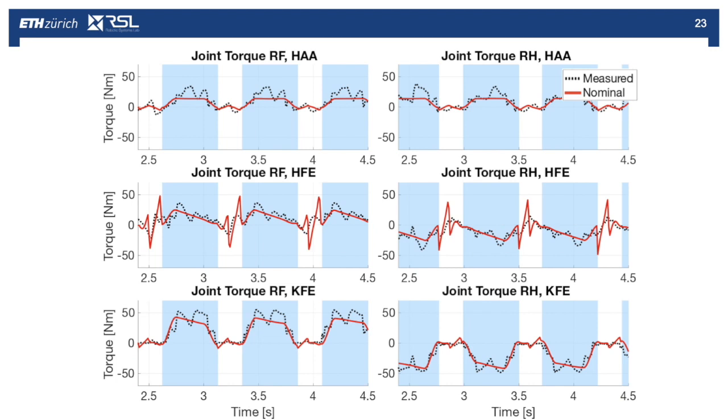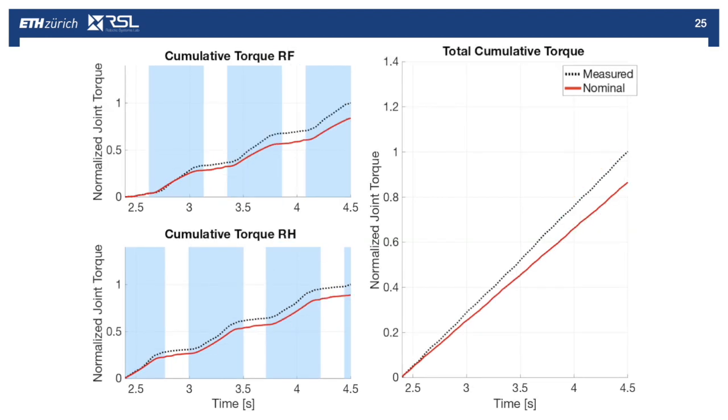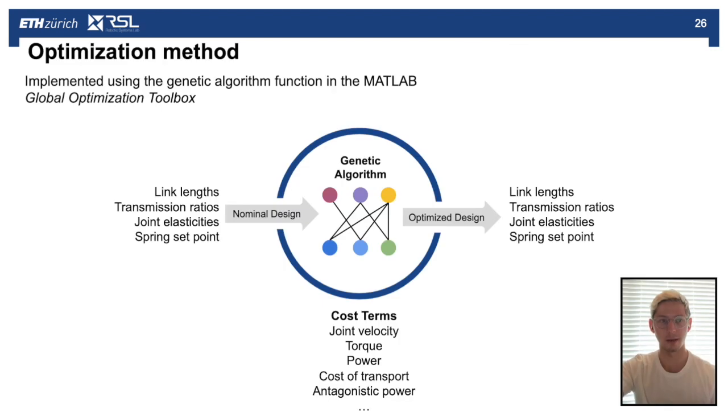We compare the same now for the joint torque, and now for the total mechanical energy of all four legs we find an error of about one percent, and the total cumulative torque for all legs where we find an error of about eight percent. Now, having validated that the framework can produce accurate results for the nominal design, we begin the optimization of the leg design parameters.